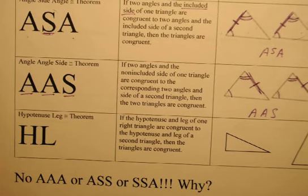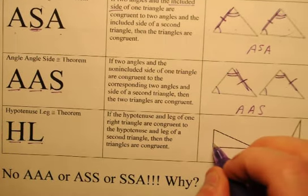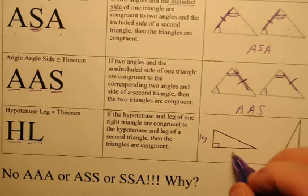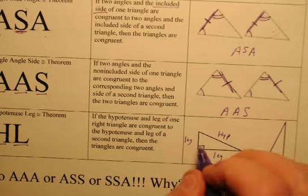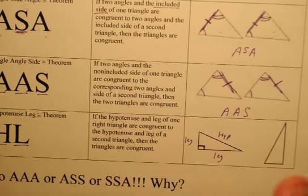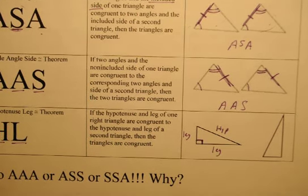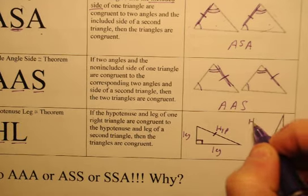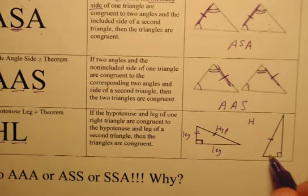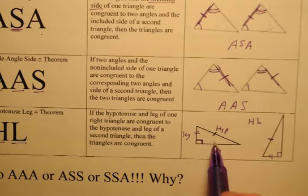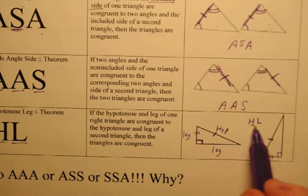The last one is a little different — it's called the Hypotenuse-Leg theorem. You need to know about right triangles: in a right triangle you have two legs and a hypotenuse. This theorem only works with right triangles. If you have a right triangle with congruent hypotenuses and one congruent leg, that is enough to conclude the triangles are congruent.